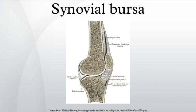A bursa is a small fluid-filled sac lined by synovial membrane with an inner capillary layer of viscous fluid. It provides a cushion between bones and tendons and muscles around a joint, helping to reduce friction between the bones and allows free movement. Bursa are filled with synovial fluid and are found around most major joints of the body.